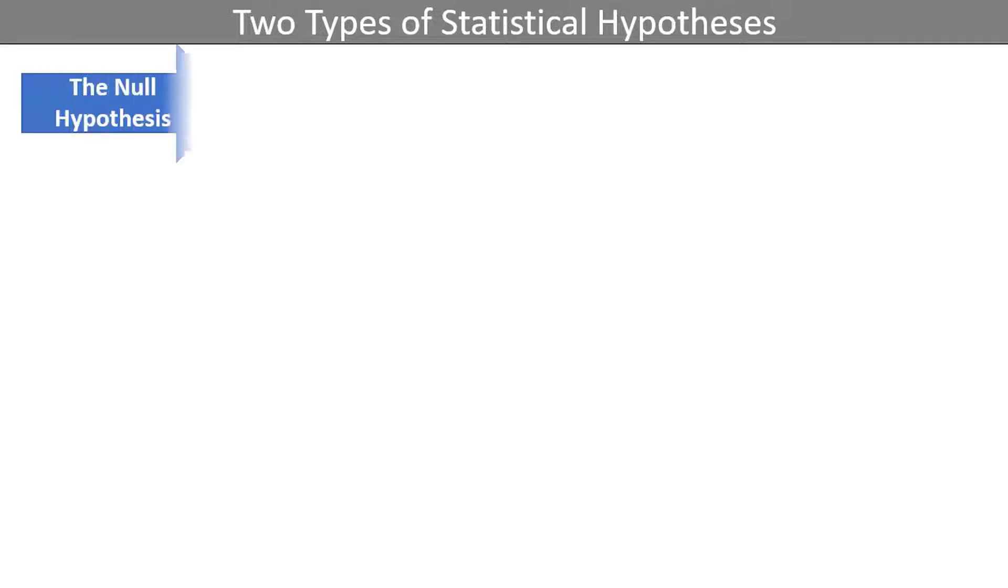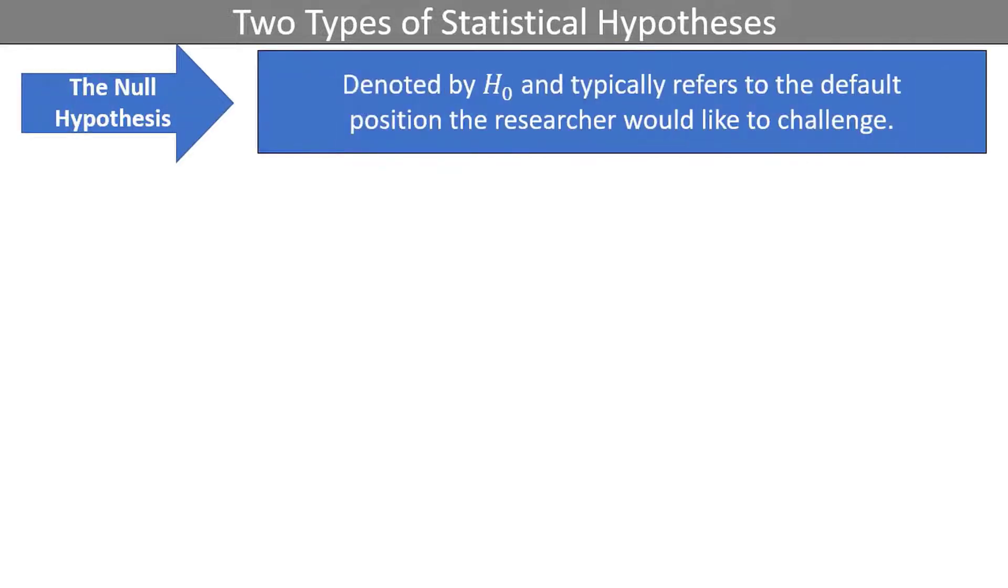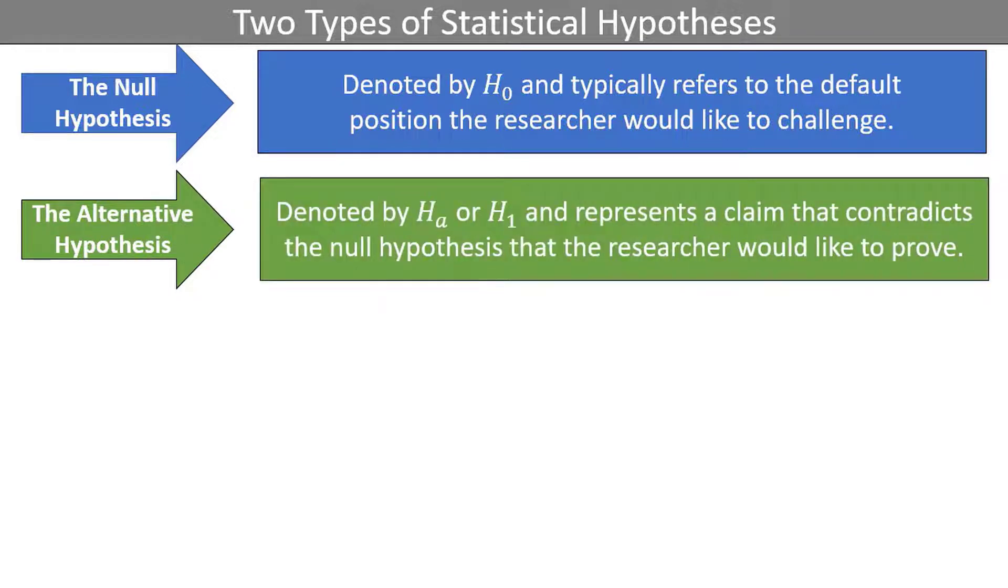In any hypothesis test that we complete in statistics, there will be two hypotheses. The null hypothesis is denoted by the capital letter H with a subscript 0, and typically refers to the status quo, the default position, or perhaps a historically accepted claim that the researcher would like to challenge. The alternative hypothesis is denoted by the capital letter H with a subscript A or 1, and typically represents a claim that contradicts the null hypothesis that the researcher would like to try to prove. Every hypothesis test contains both a null and alternative hypothesis.